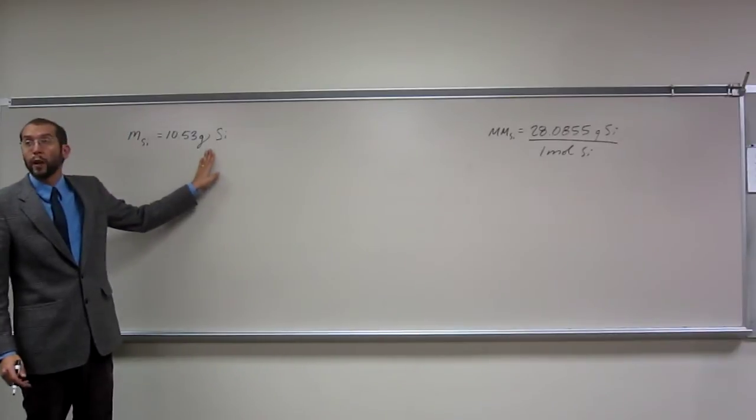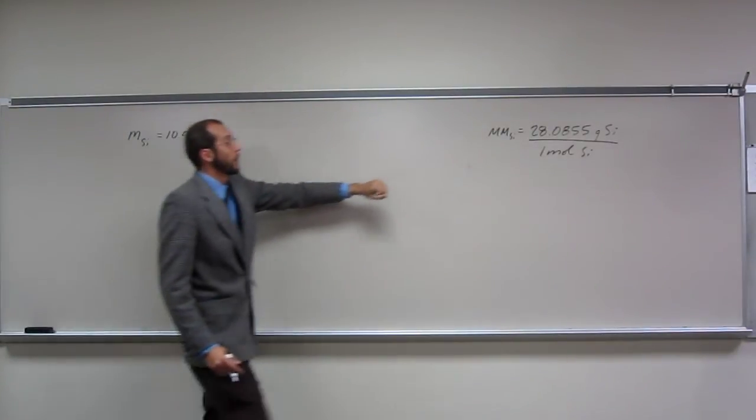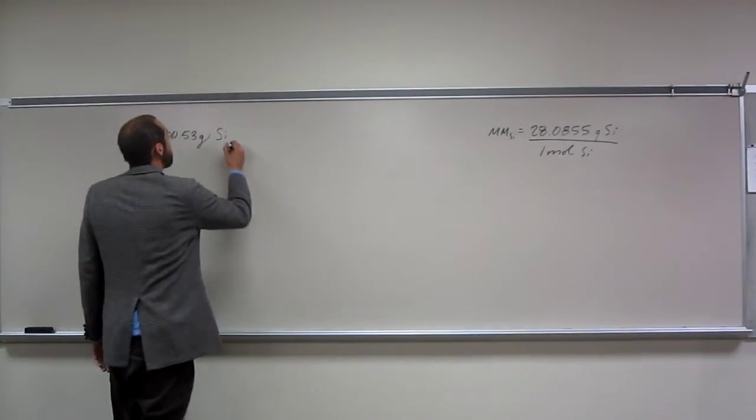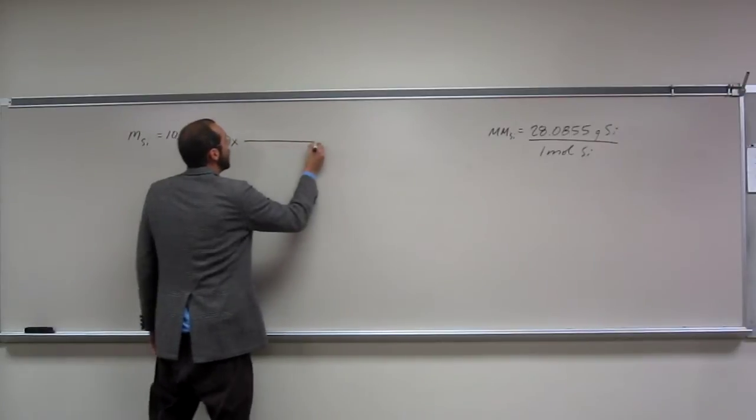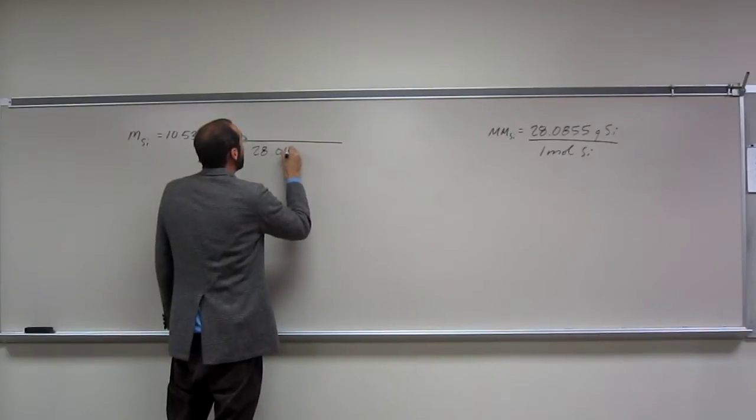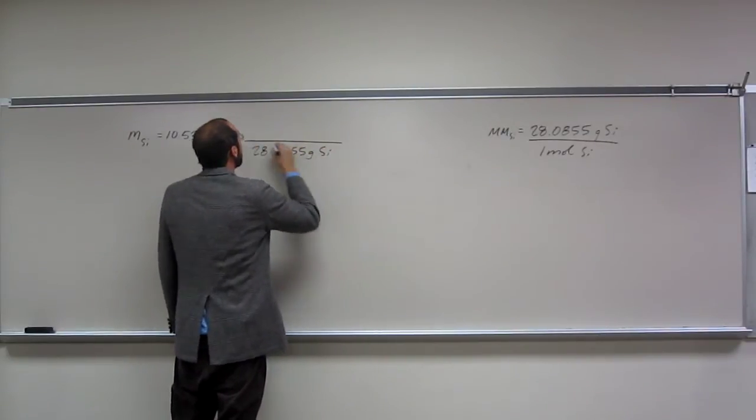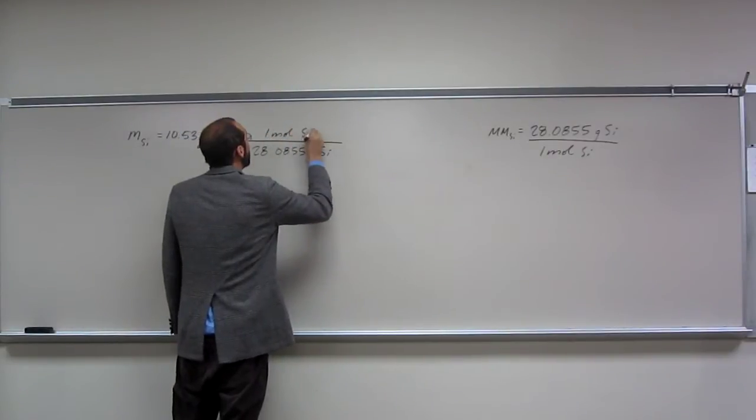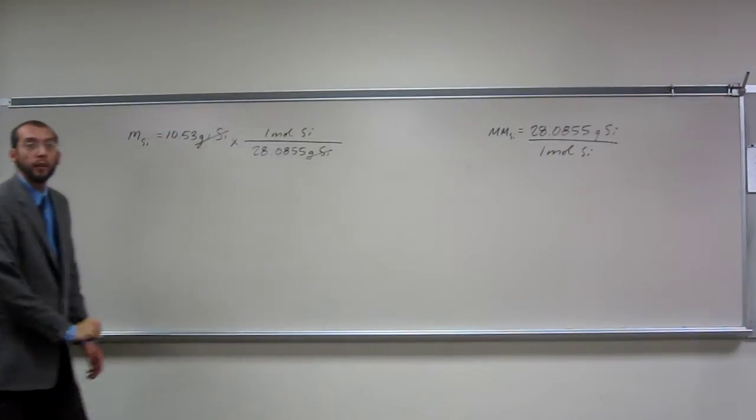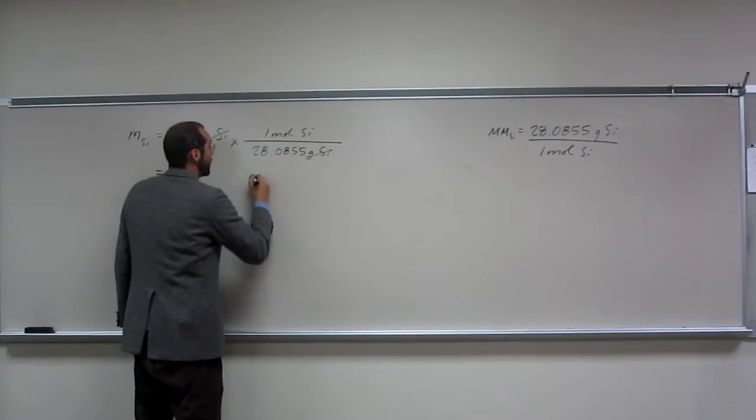So you want to cancel out grams of silicon, right? And you want to get moles of silicon. So you're going to have to put this part at the bottom, right? Is everybody okay with things like that? So 28.0855 grams of silicon, one mole of silicon. So hopefully you see grams of silicon cancels out there, giving us moles of silicon as our units.